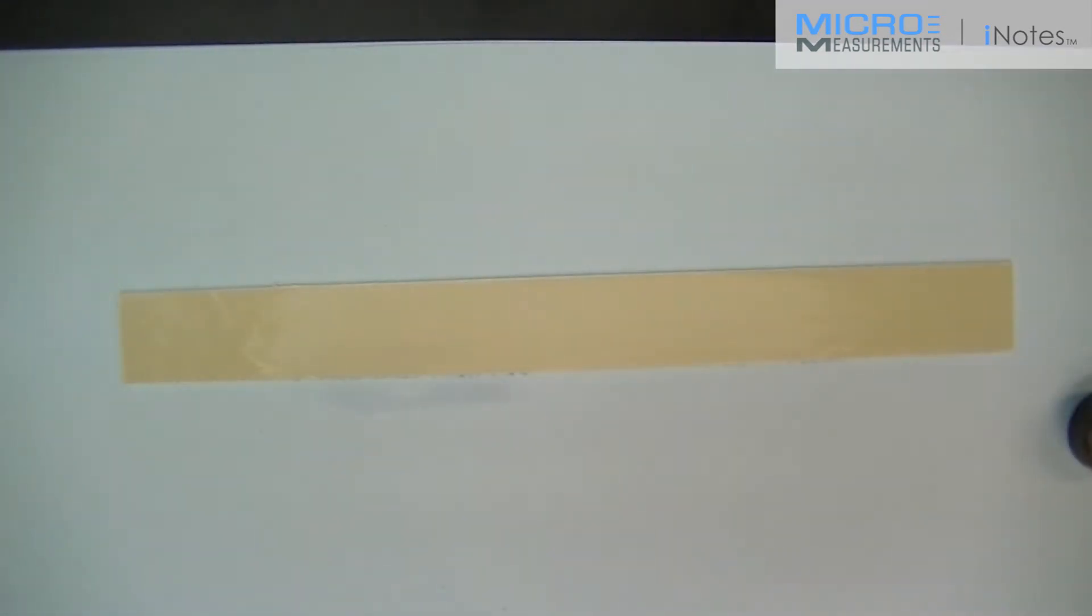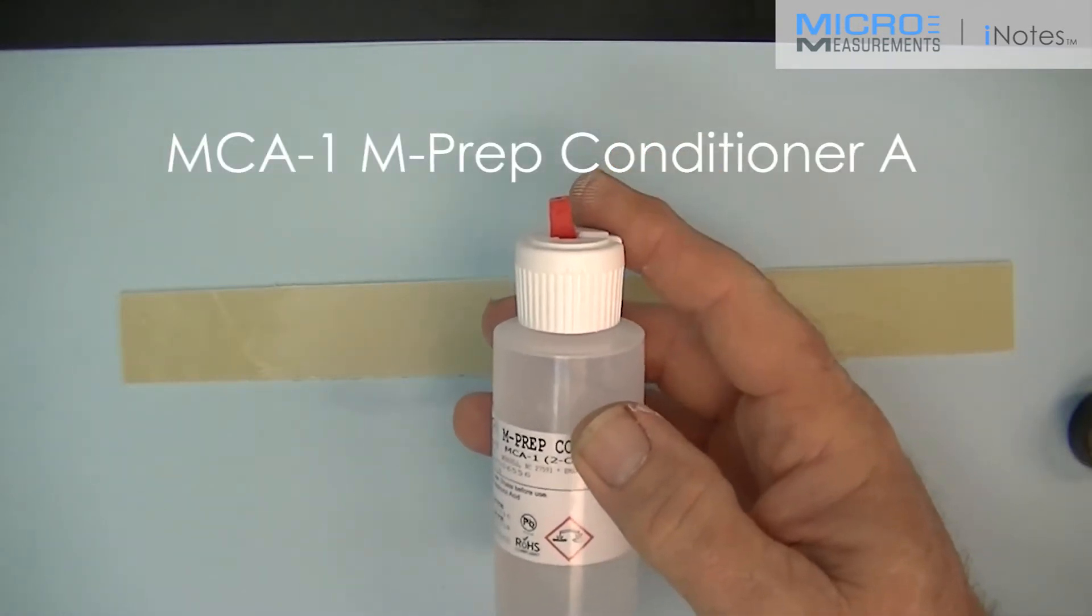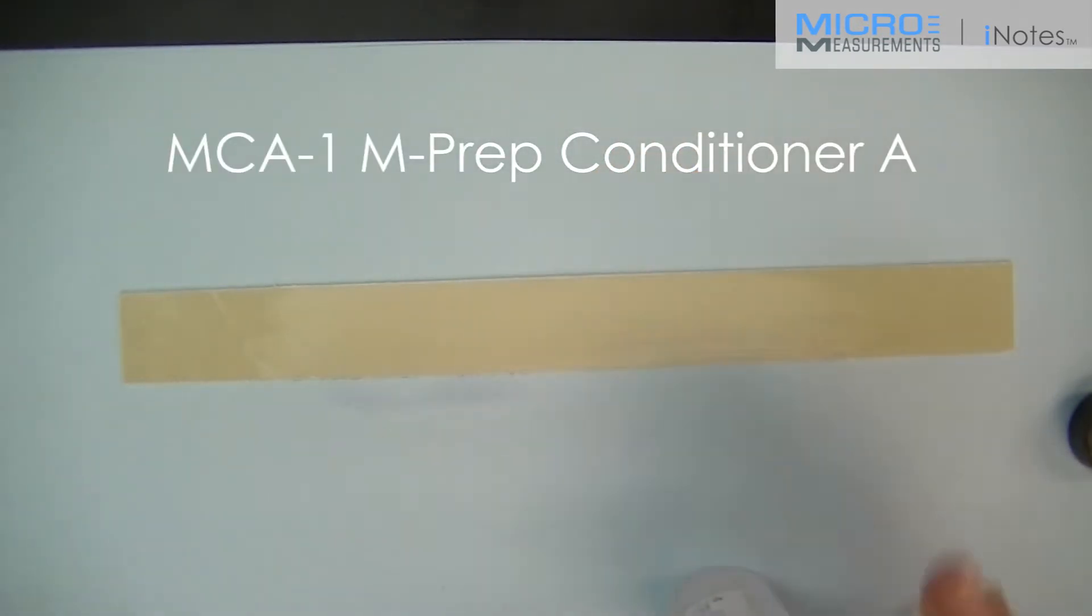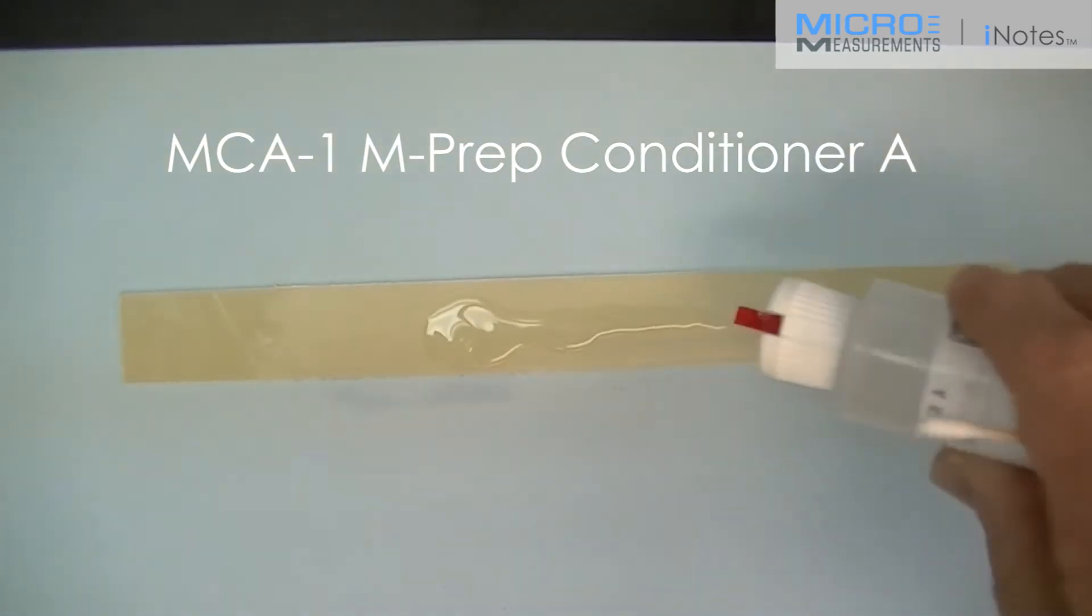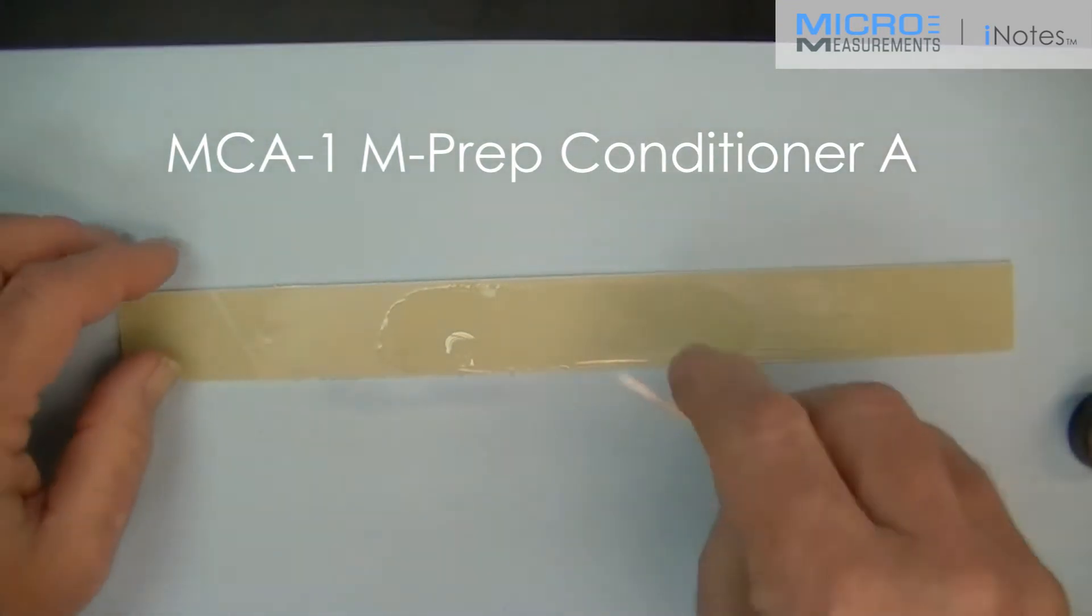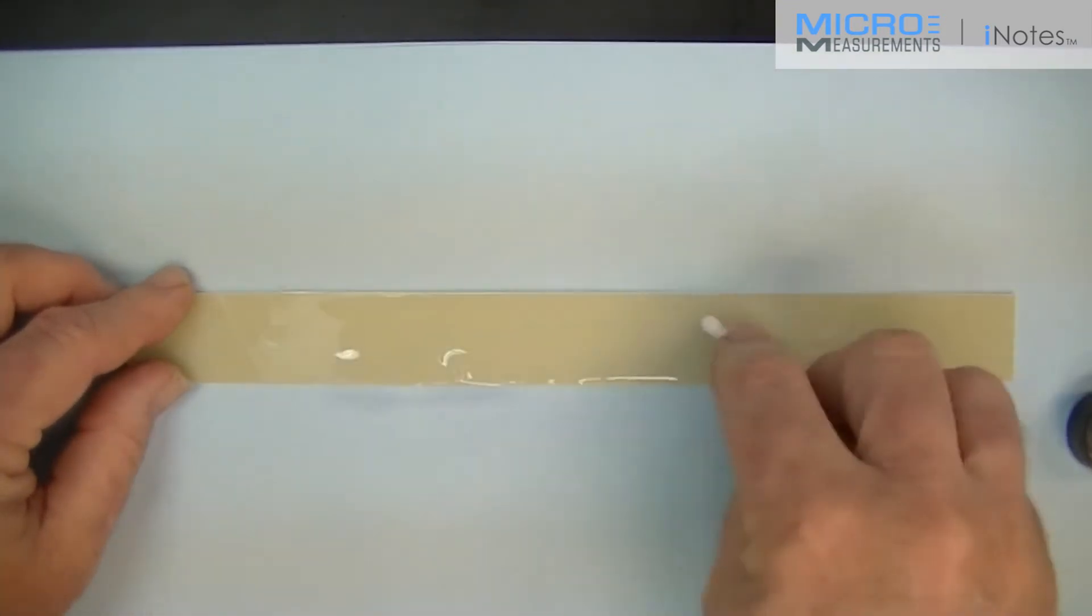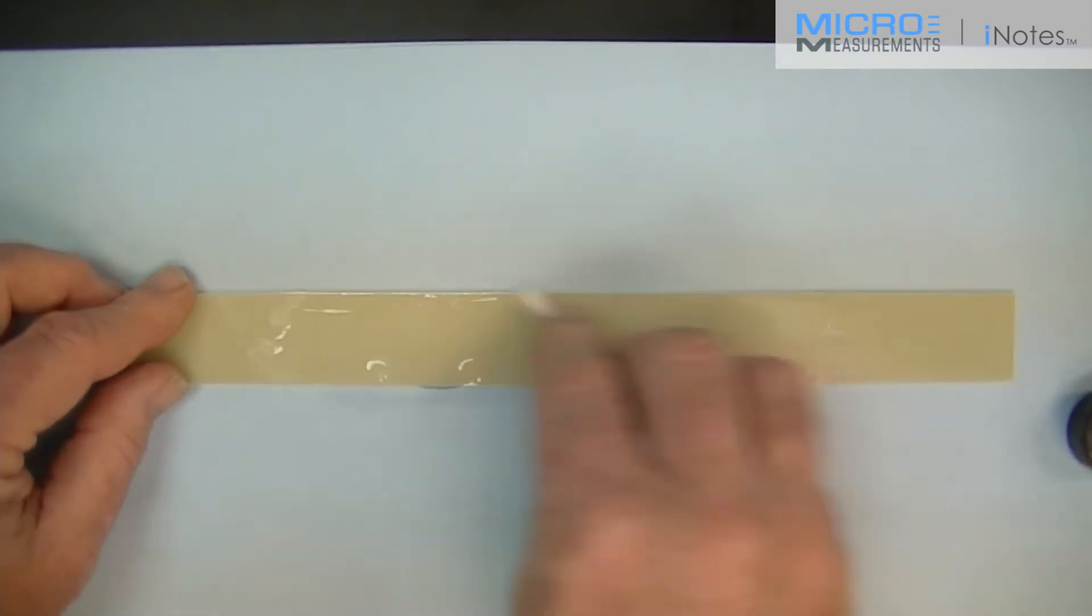The next step will be to locate the Conditioner A, the mild phosphoric acid solution, red tip bottle, and a cotton tip applicator. I'm going to flood the surface of the beam with the Conditioner A. This is going to remove any organic contaminants left behind, and also put the dust or debris that was sanded into suspension so that we can blot it away.